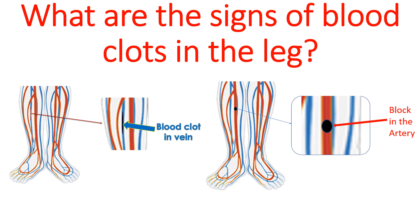Signs of blood clots in the leg depend on whether the clot is in the artery or the vein. When the artery is blocked, it produces pain, pallor, coldness of the leg, loss of sensation and paralysis.